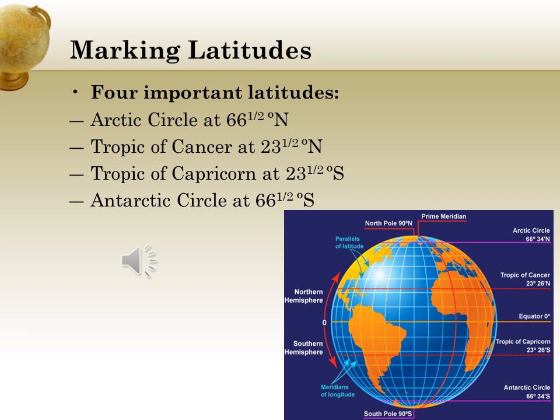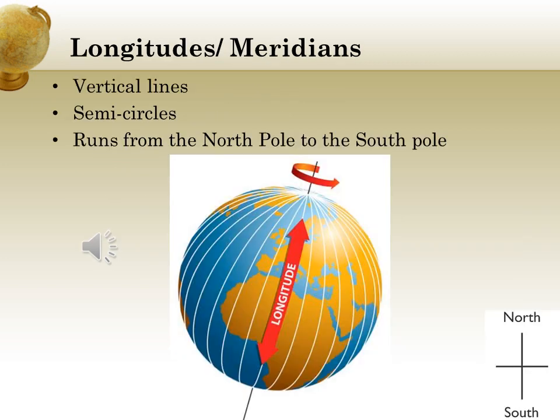There are 4 more important latitudes: the Arctic Circle at 66.5 degrees north, the Tropic of Cancer at 23.5 degrees north, the Tropic of Capricorn at 23.5 degrees south, and the Antarctic Circle at 66.5 degrees south. Now let us learn about longitudes. The vertical lines that are semicircles running from the north pole to the south pole are called longitudes or meridians.